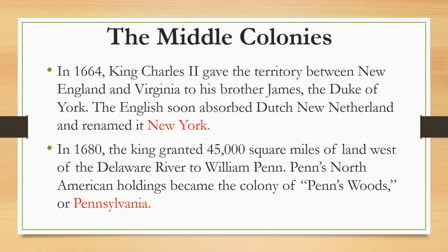In 1680, the king granted 45,000 square miles of land west of the Delaware River to William Penn, a Quaker who owned large swathes of land in Ireland. Penn's North American holdings became the colony of Penn's Woods, or Pennsylvania. Lured by fertile soil and the religious toleration that Penn promised, people migrated there from all over Europe. Like their Puritan counterparts in New England, most of these immigrants paid their own way and had enough money to establish themselves when they arrived. As a result, Pennsylvania soon became a prosperous and relatively egalitarian place.